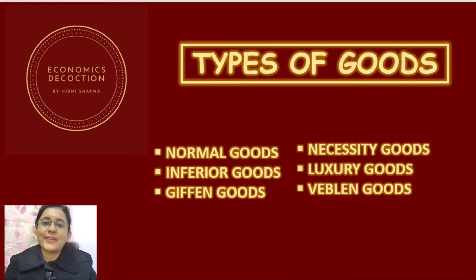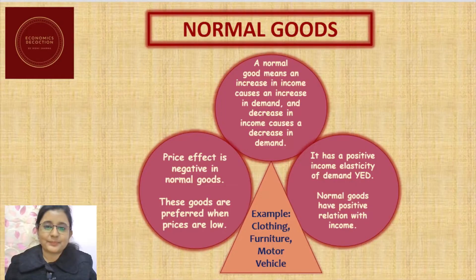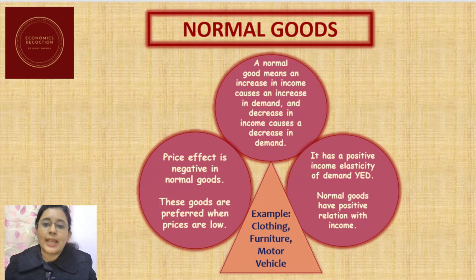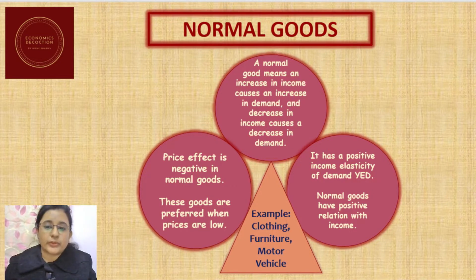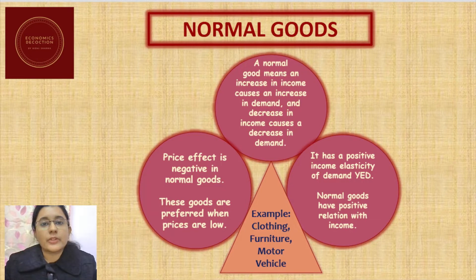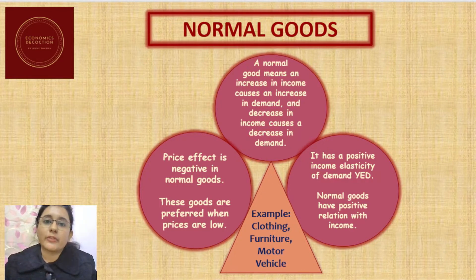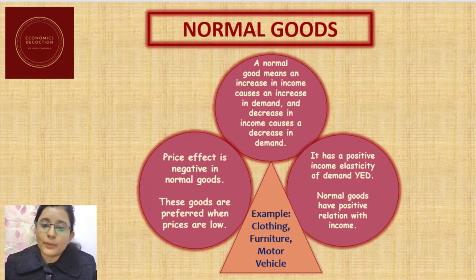First, we will learn about normal goods. A normal good means that an increase in income causes an increase in demand, and a decrease in income leads to a decrease in demand. This means the income effect is positive in case of normal goods, and income elasticity of demand is also positive. As income moves, the demand for the good moves in the same direction.